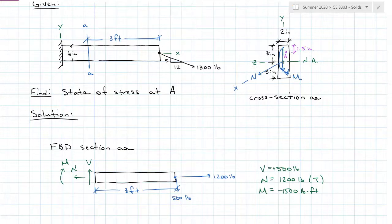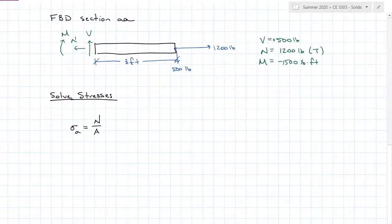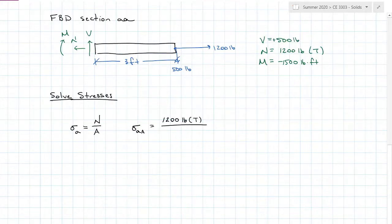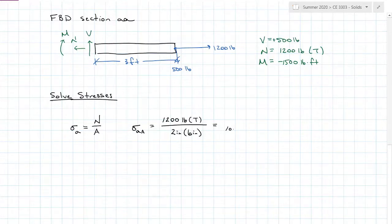Now that I have these forces, I can calculate the stresses. Since I have a normal force, I can solve for an axial normal stress. My axial stress at A equals the normal force, 1,200 pounds in tension, divided by the cross-sectional area, 2 inches by 6 inches. That gives an axial normal stress at A of 100 psi in tension.